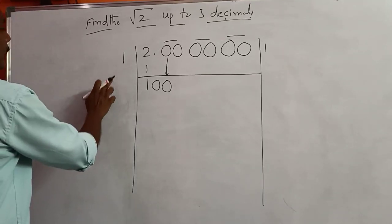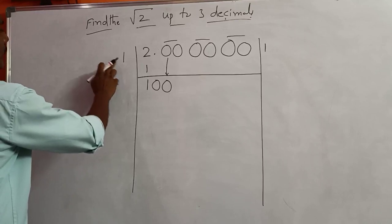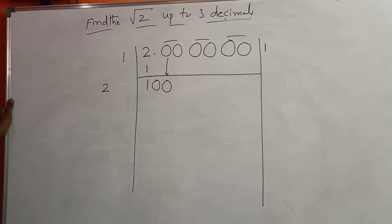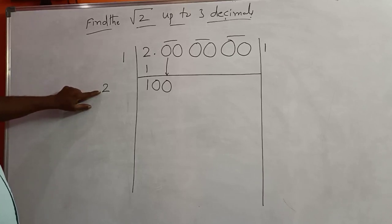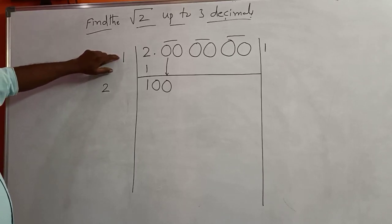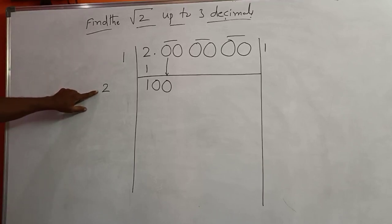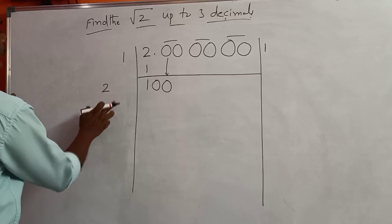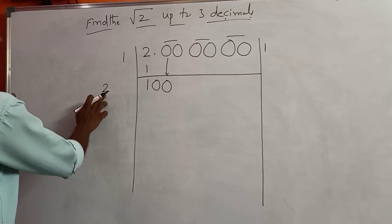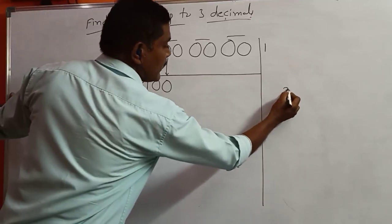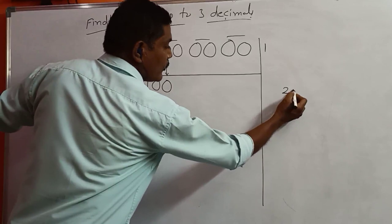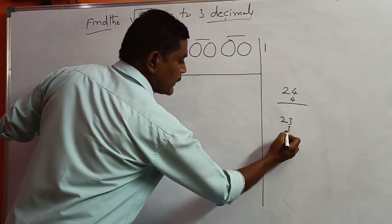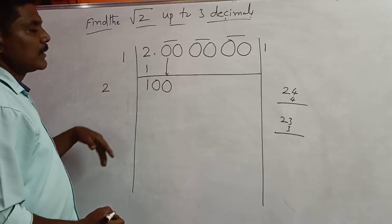Now double this number: 1 plus 1 equals 2. After 2, whatever number we write here, we multiply the same number. For example, if you write 4, multiply 4 by 24; if you write 3, multiply 3 by 23. If you write 4: 24×4=96, 4 is placed here. If you write 5: 25×5=125, not possible. So we take 4. Put the decimal here and write 4. Then multiply 4 by 24 equals 96. Subtracting: 100 minus 96 equals 4.